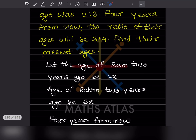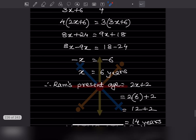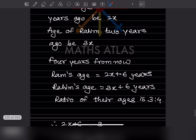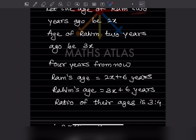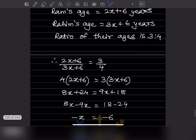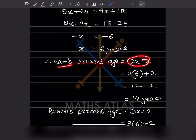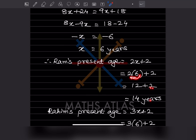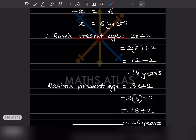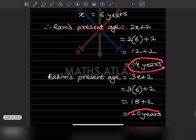Now find the present ages. As established, the present ages are 2X plus 2 for Ram and 3X plus 2 for Rahim — not just 2X, because that was 2 years ago. For Ram: 2 into 6 plus 2 is 12 plus 2, which is 14. For Rahim: 3 into 6 plus 2 is 18 plus 2, which is 20. So the present age of Ram is 14 years and the present age of Rahim is 20 years.